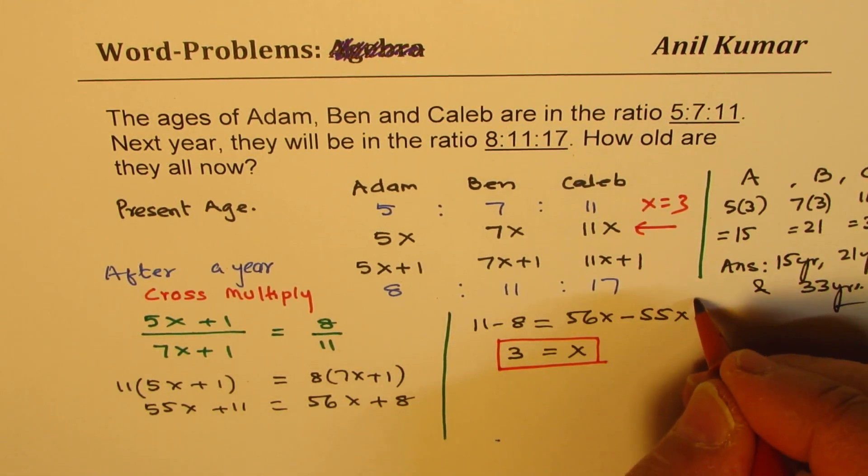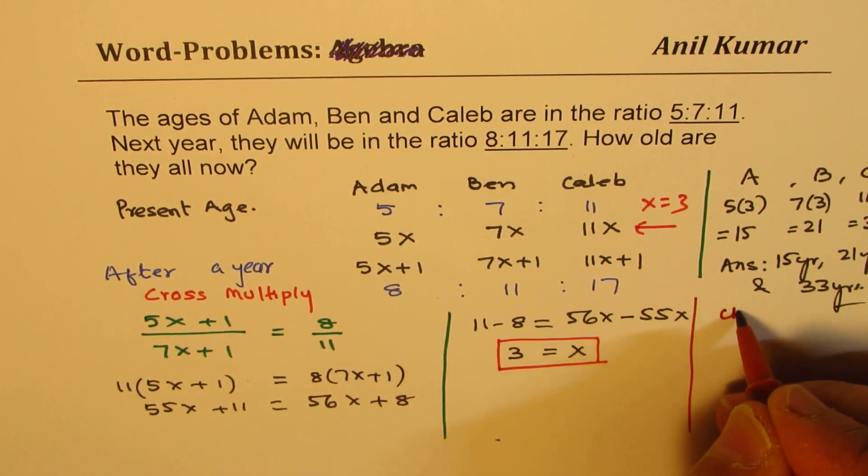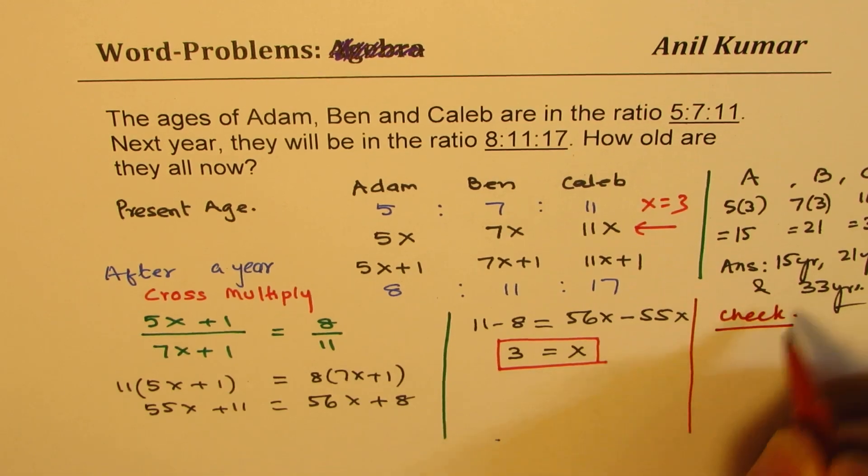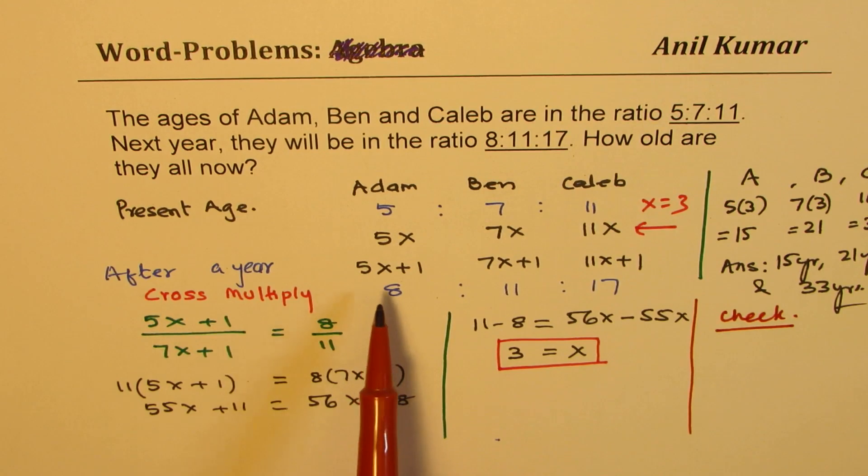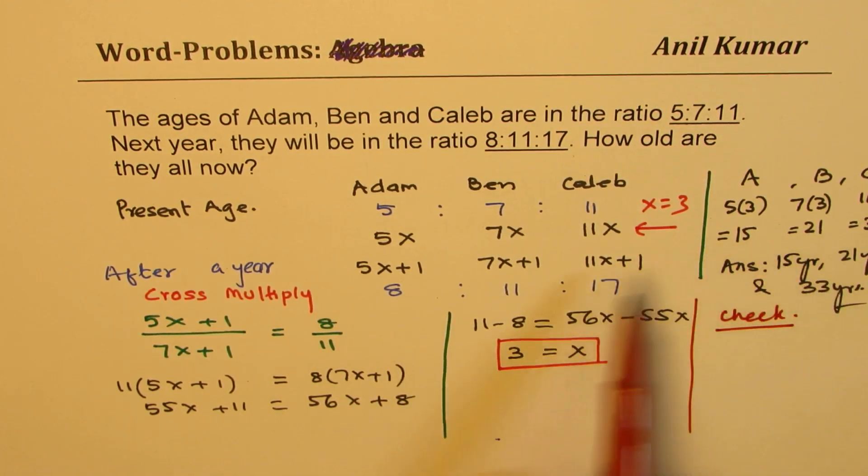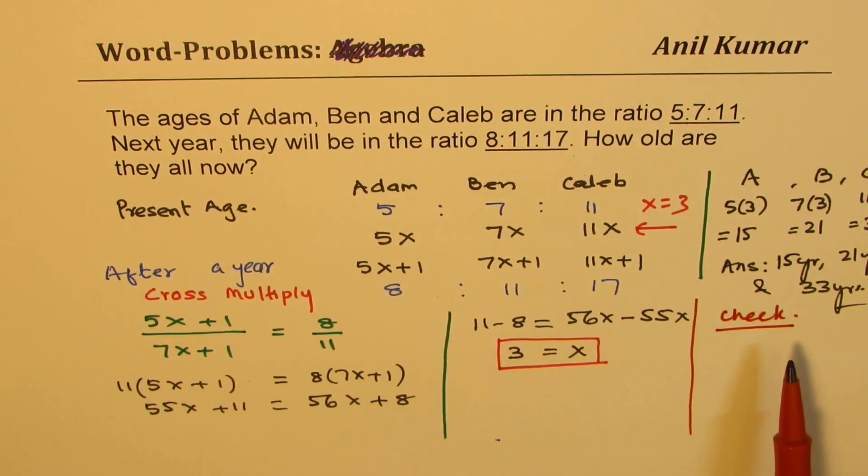So that is how you can actually solve. Now, let me tell you one more thing. You can also check your answer. How do you check your answer? Well you know these are your ages. You can add one to these ages and check if it is really in the ratio of 8, 11 and 17. Perfect. So you can do it on your own, but I hope you understand the solution.